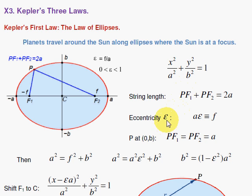Well, what about relating b to the eccentricity? Well, a squared equals a squared epsilon squared, which is your f squared plus b squared. So b squared is 1 minus epsilon squared times a squared.